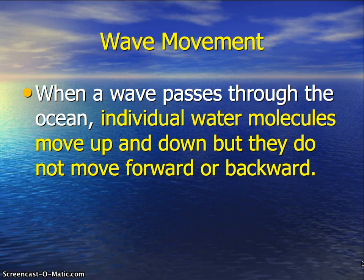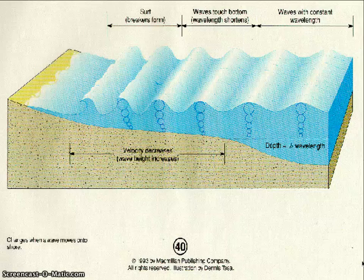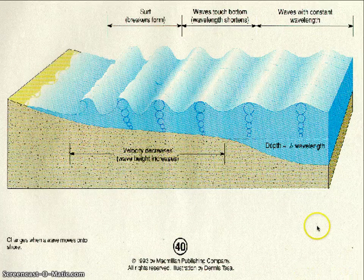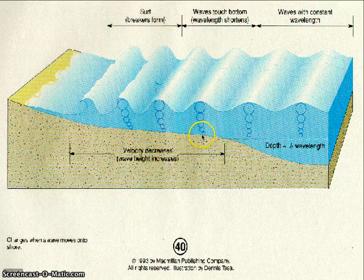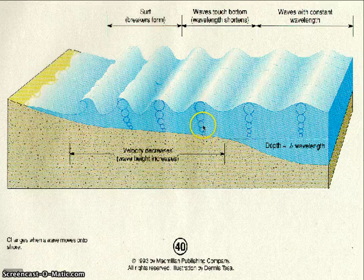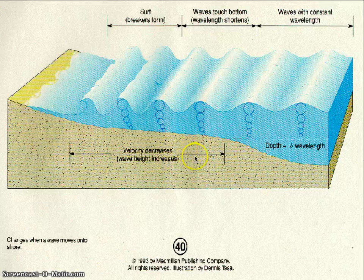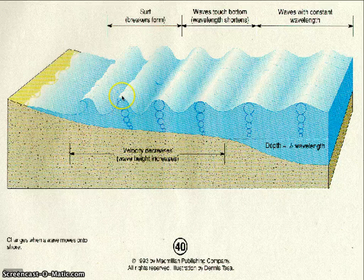This changes as the wave approaches shore. As wave energy approaches shore, the molecules at the bottom of the wave start to slow down because of friction against the sand. As those molecules slow down, the top doesn't have as much friction, so it's still moving at a faster rate. As the bottom begins to drag behind, the top begins to fold forward until eventually it breaks onto shore.